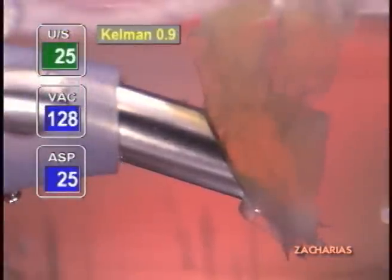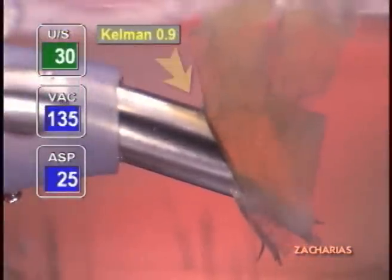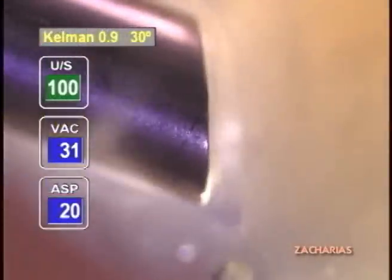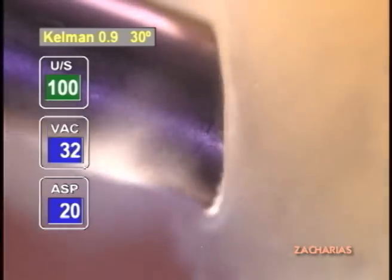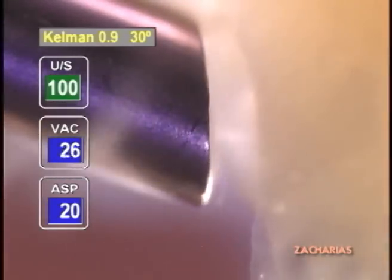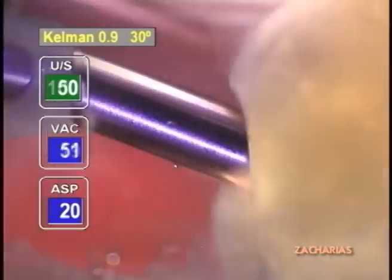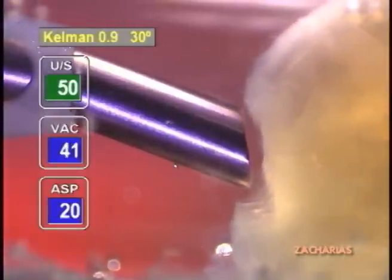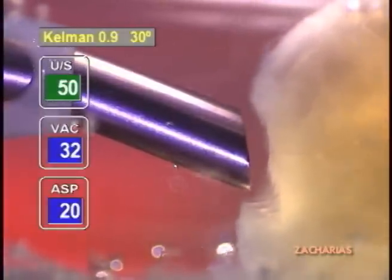Tissue contact produces emulsification at low powers, like if a spoon was removing material due to the mentioned lateral displacement. Only the material that enters direct physical contact is significantly altered and severed. The angle of attack makes the rim apex enter into the lens material like a wedge on occlusion of the tip.